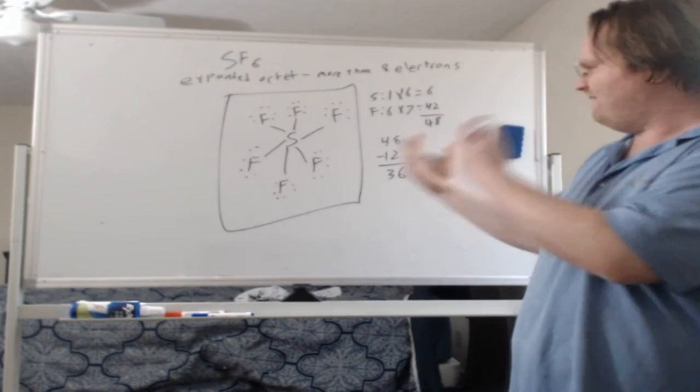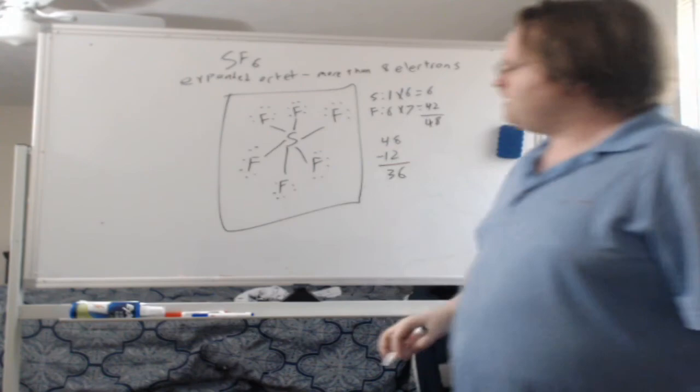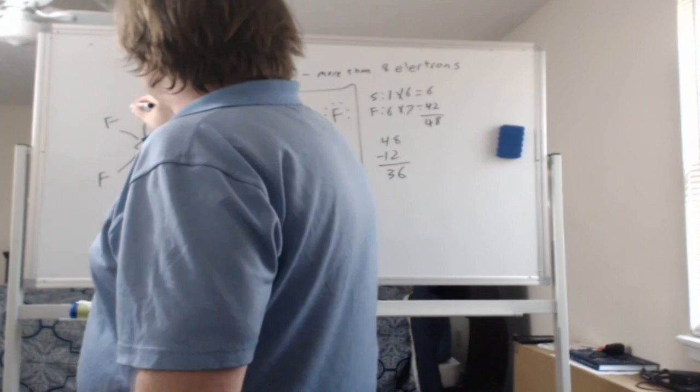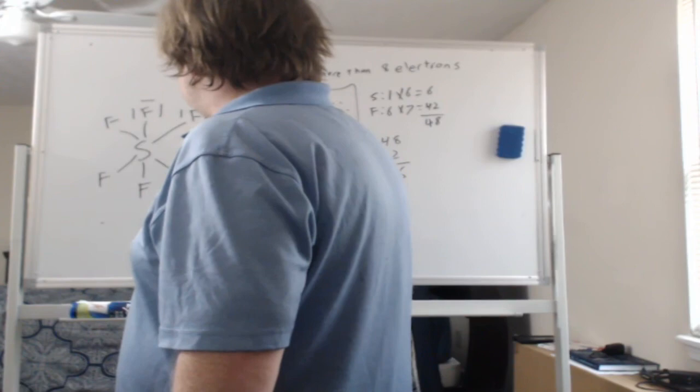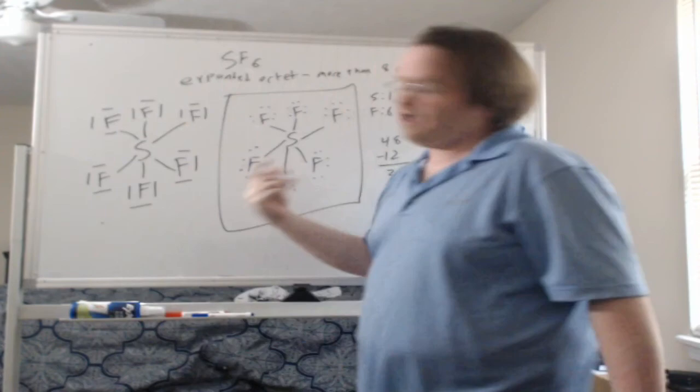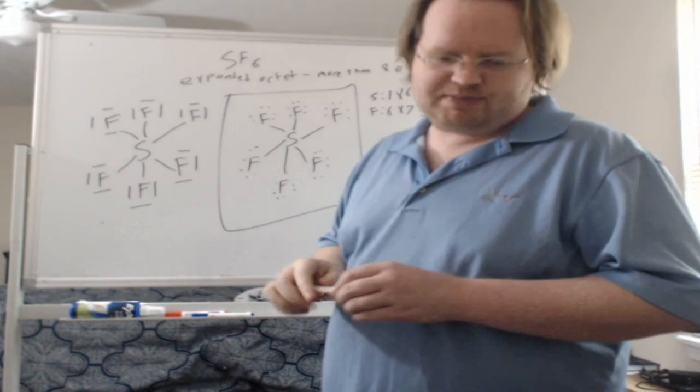Now you notice this took a little while to draw. Another thing you can do is we can shorthand the drawing of the dots on the external atoms by using lines to represent those pairs. So you'll see stuff like this sometimes where people will draw lines and those lines are meant to represent two electrons each. I think this is harder to read so I tend not to do it this way. But I understand that speed is important to people and if you were to see this somewhere else or did it on a homework or something I would accept that as well.